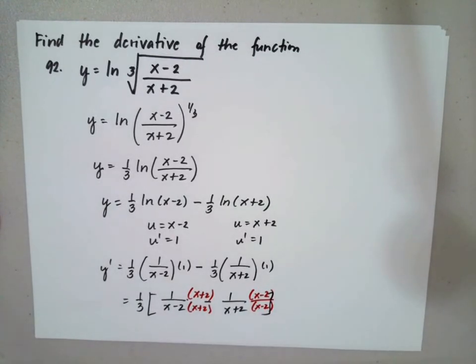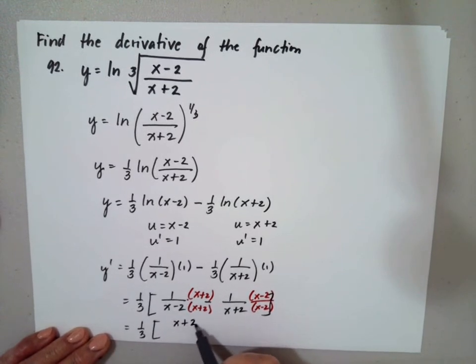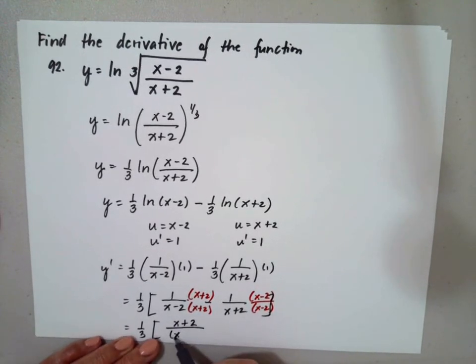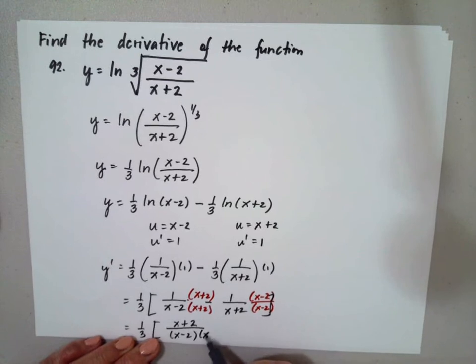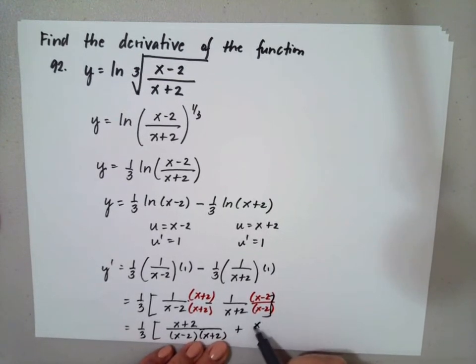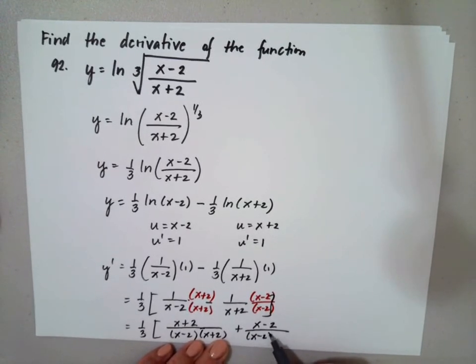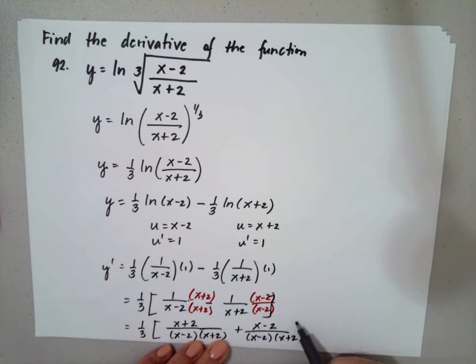So this one will be equal to 1 third of x plus 2 over x minus 2 times x plus 2 plus x minus 2 over x minus 2 times x plus 2.